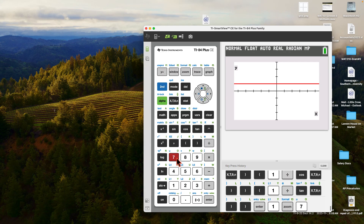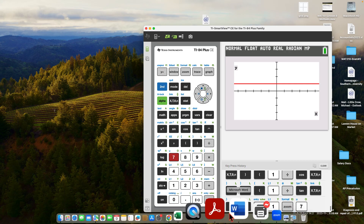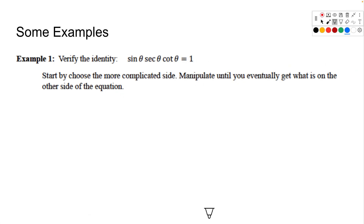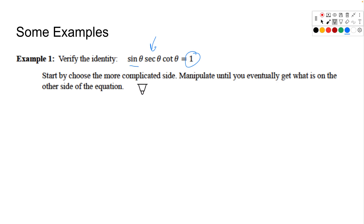Now let's do it analytically. The process: take the more complicated side and try to make it look like the less complicated side. We're going to manipulate the left side until we get it equal to 1. What I mean by manipulate is changing everything into terms of sine or cosine, then we'll see how things cancel out.